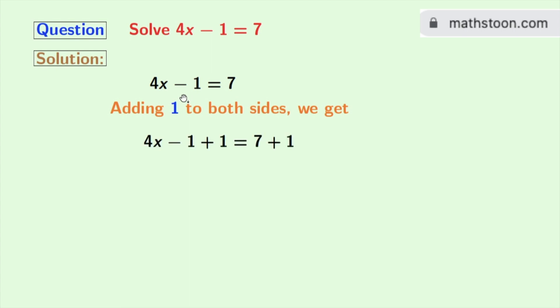By doing so, we have 4x minus 1 plus 1 is equal to 7 plus 1. See that we have minus 1 and plus 1 in the left hand side which will be 0. So we are left with 4x in the left hand side.